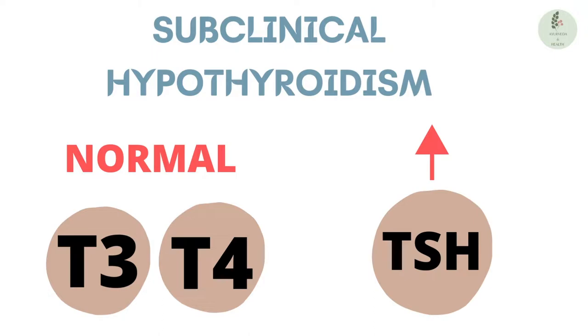In subclinical hypothyroidism, T3 and T4 levels are normal, but TSH — that is thyroid stimulating hormone — is high. In this condition also, you need to take treatment.